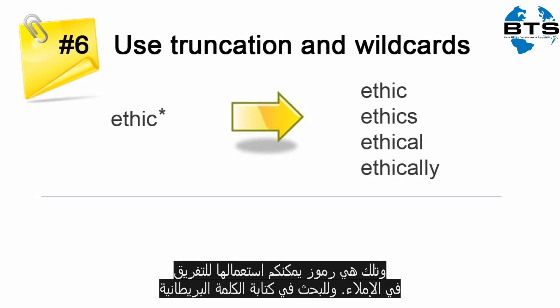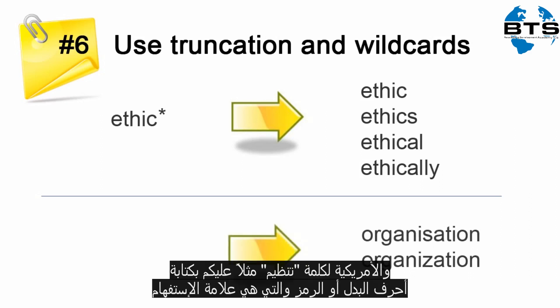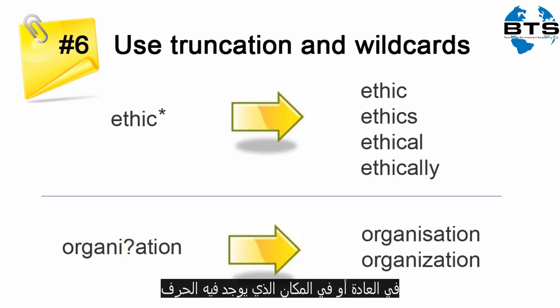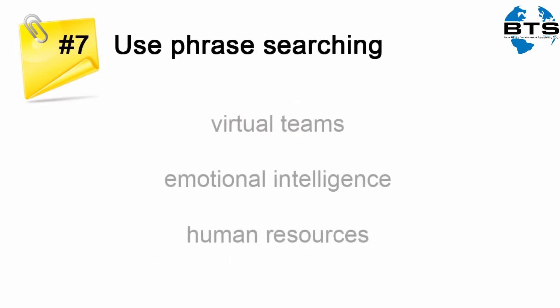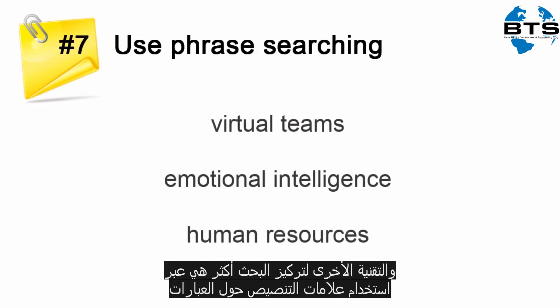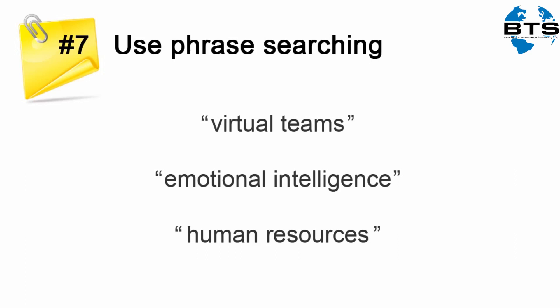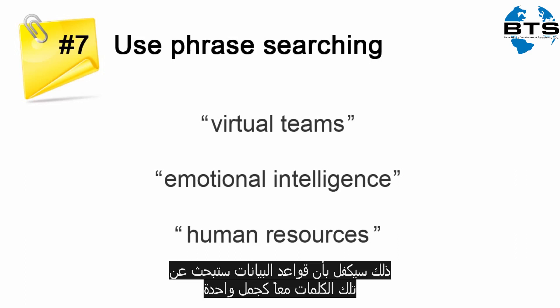To search for both the British and American versions of the word 'organisation', put a wildcard symbol — usually a question mark — where either letter could be. Truncation and wildcard symbols do vary across databases, so check the database's help if you are unsure. Another technique for a more focused search is to use inverted commas around phrases, which will ensure the database searches for those words together as a phrase.